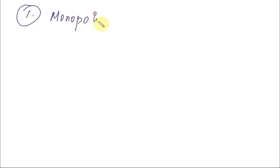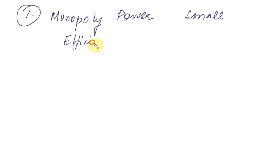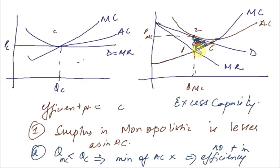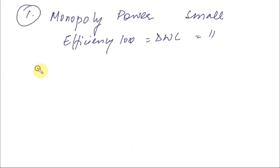These are the inefficiencies that make the consumer worse off. So should we regulate monopolistic competition? We do not regulate it, for two reasons. First, although monopoly power exists within monopolistic competition, it is very small. Because the monopoly power is very small, the efficiency loss — also called deadweight loss — is also very small. It is so small that it may not make sense for the government to intervene to correct it.